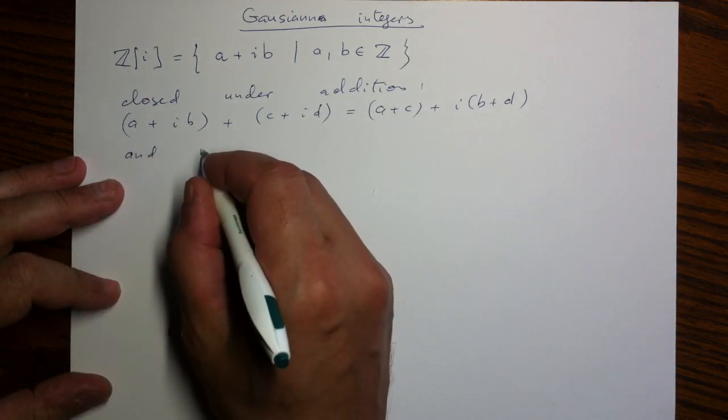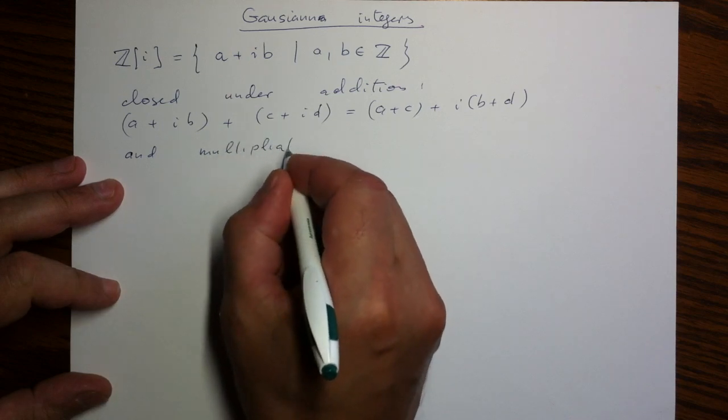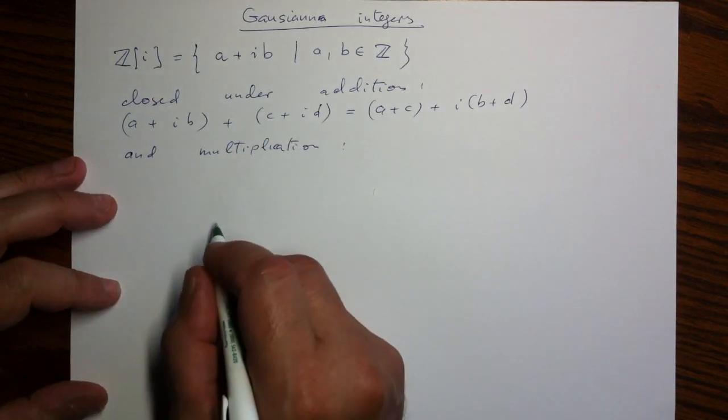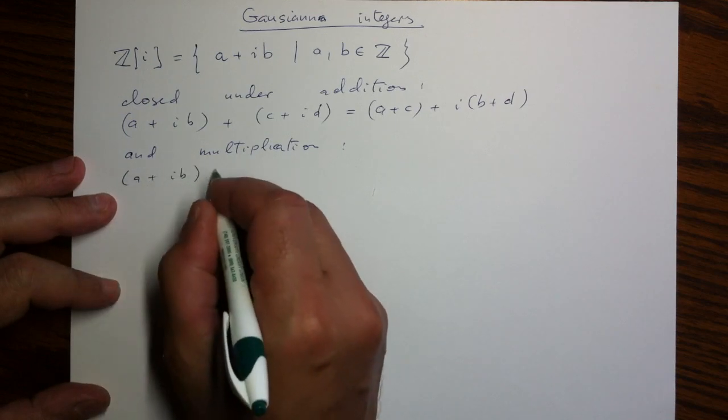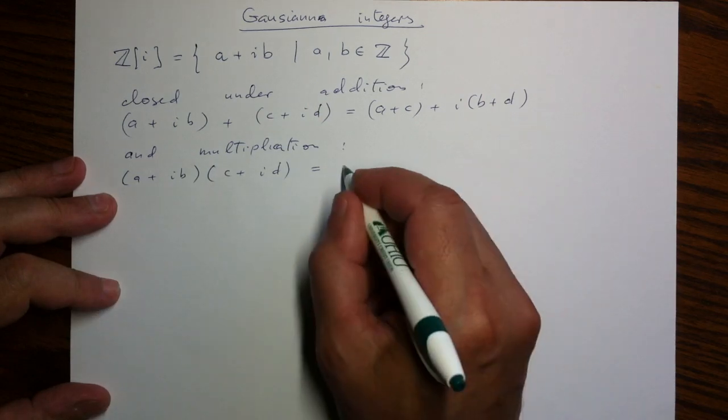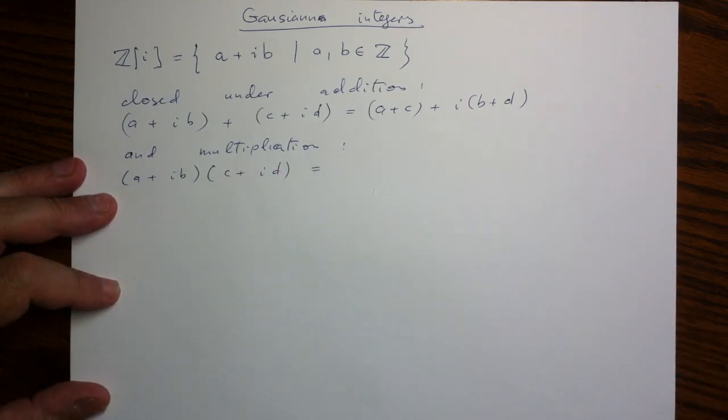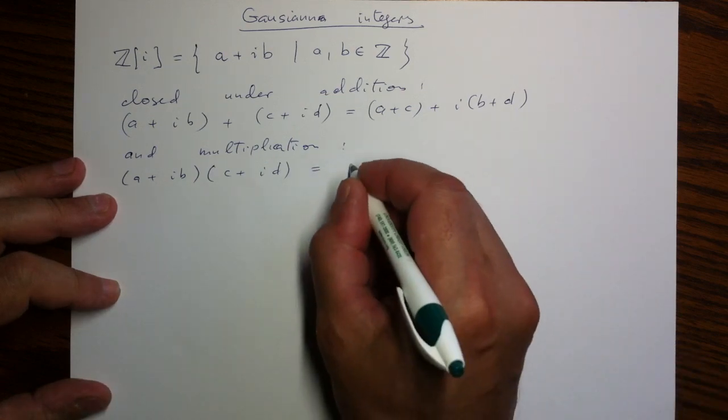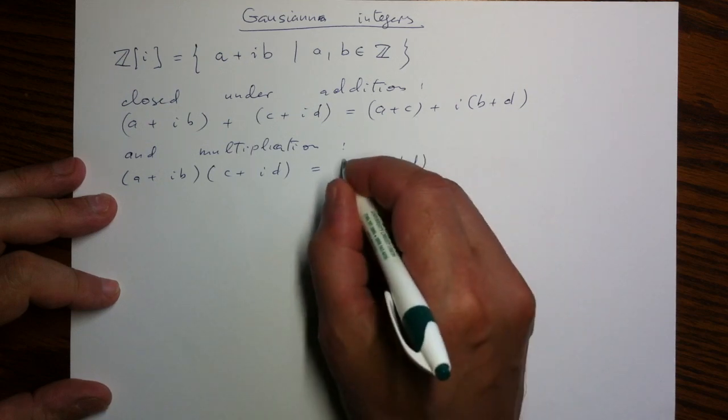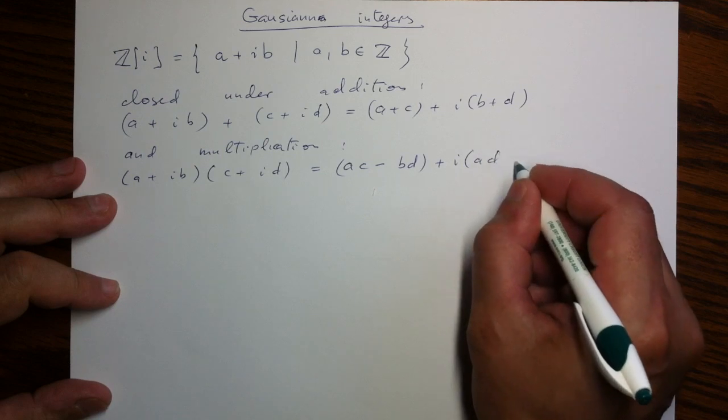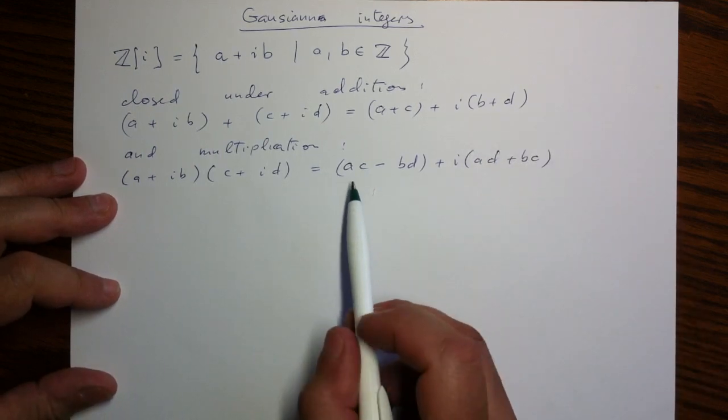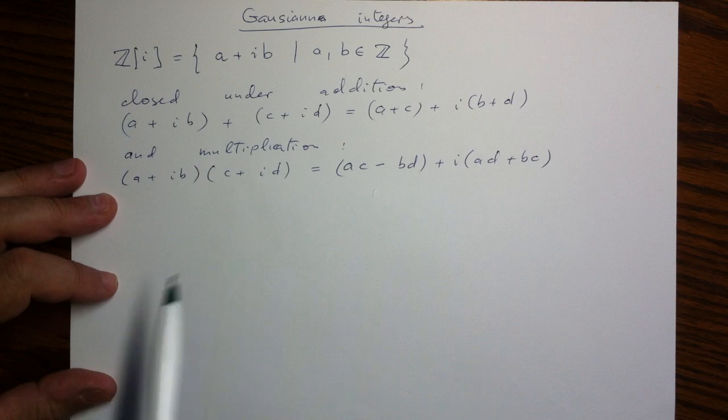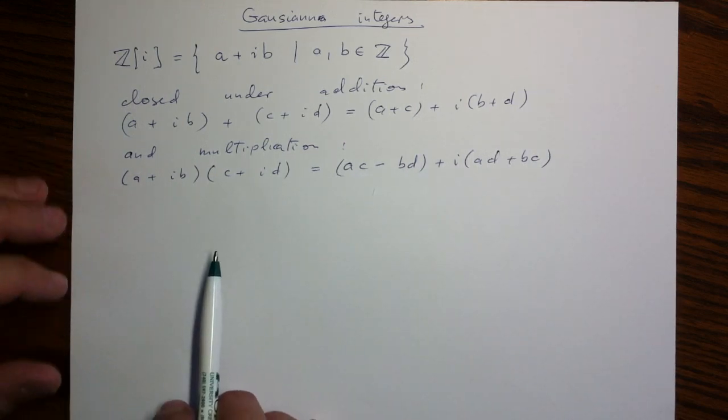But also, it is closed under multiplication. If we remember how to multiply two complex numbers using algebraic expressions, we just need to follow the standard rules of distributivity and associativity and commutativity, and the result will be AC minus BD plus i(AD plus BC). And the point is that if A, B, C, D again are integers, so if we take two Gaussian integers and multiply them, the result will be Gaussian integers, and these expressions will be still integers.